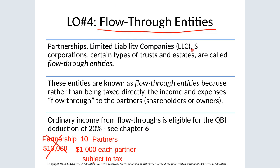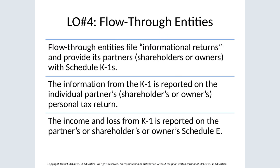Limited liability companies are different in that they can choose how to be taxed — either as a C corporation with double taxation, or as a partnership. Partners and S corporation shareholders receive a Schedule K-1 from the partnership, LLC, or S corporation — similar to a W-2 — which they use to report these items on their individual Form 1040.